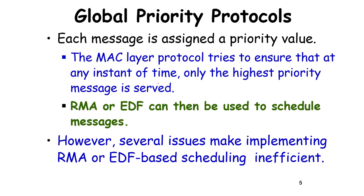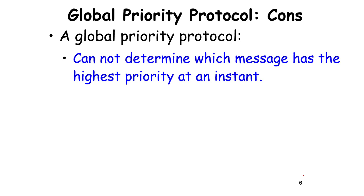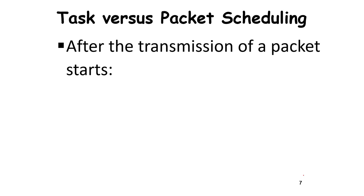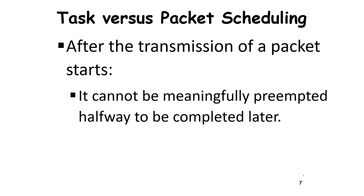However, there are practical network issues that make RMA and EDF inefficient. In a CPU, everything runs on the same hardware and all priorities are accessible, but a network is a distributed system with no single centralized arbiter. It is hard to determine which message has the highest priority at any instant because messages originate at different nodes. Also, unlike CPU tasks, packet transmission cannot be preempted.